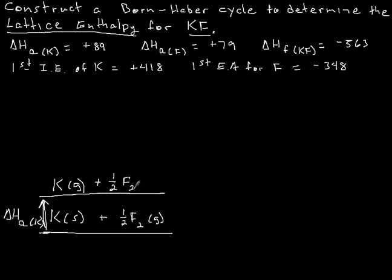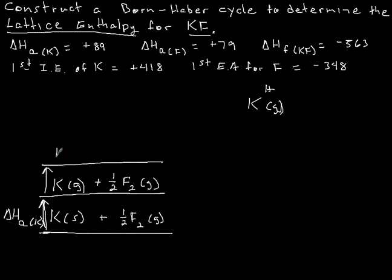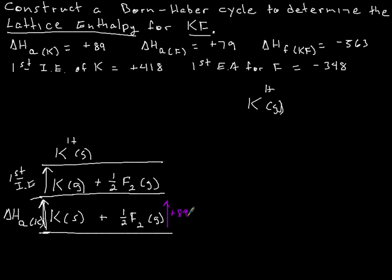We bring the ½F₂(g) up with us since we're not working with it yet. We're going to continue working with the metal until it's in the gaseous state with its one positive ion. So we make another transition and ionize that potassium atom, turning it into a potassium 1+ ion — that's the first ionization energy, and it's still in the gas state. The atomization of potassium was +89, and the first ionization energy of potassium is +418 kilojoules per mole.